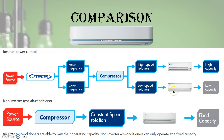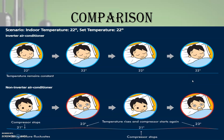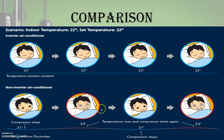The non-inverter AC always consumes more energy, whereas the inverter AC saves energy. Regarding comfort, consider a set temperature of 22°C. In a non-inverter AC, the compressor stops at 21°C and turns on again at 23°C, repeatedly cycling on and off — affecting the user's comfort. In contrast, an inverter type AC always maintains exactly 22°C, so the comfort level is very high.